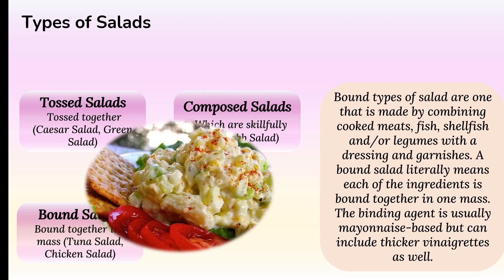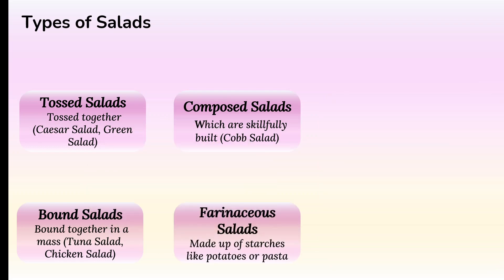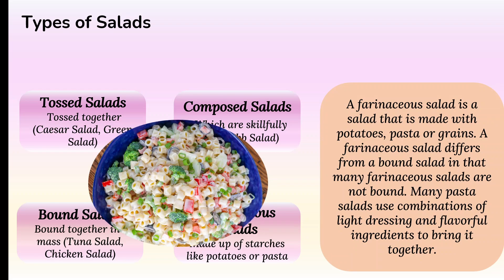The fourth type is known as farinaceous salads. From the name it is clear that these are made up of starches like potatoes or pasta. A farinaceous salad is a salad made with potatoes, pasta or grains. It differs from a bound salad in that many farinaceous salads are not bound together in the same way — though the presence of dressing is still clearly present.